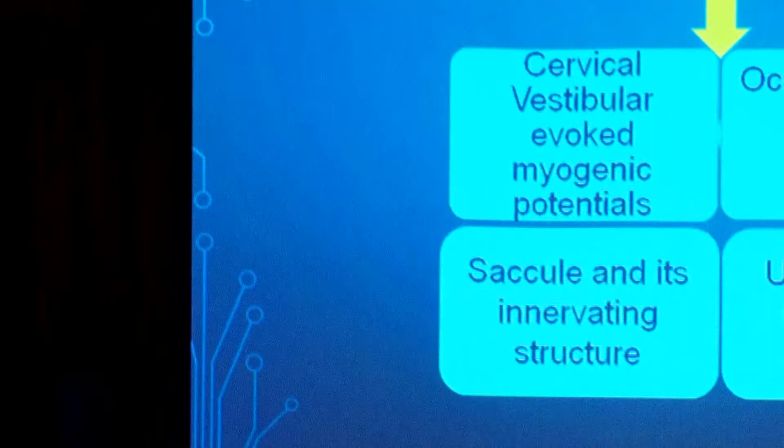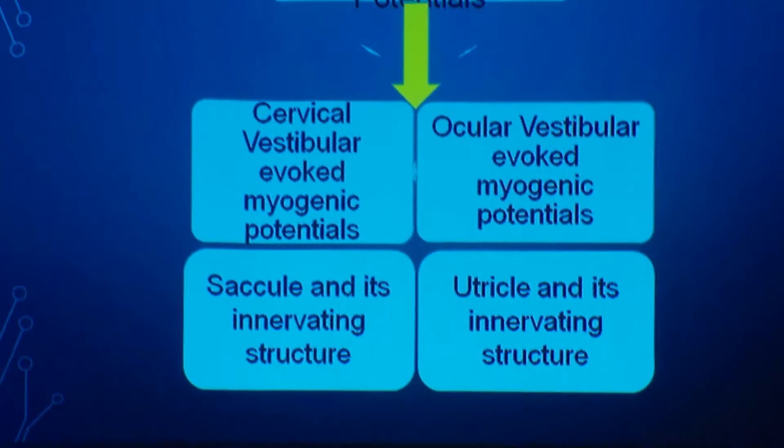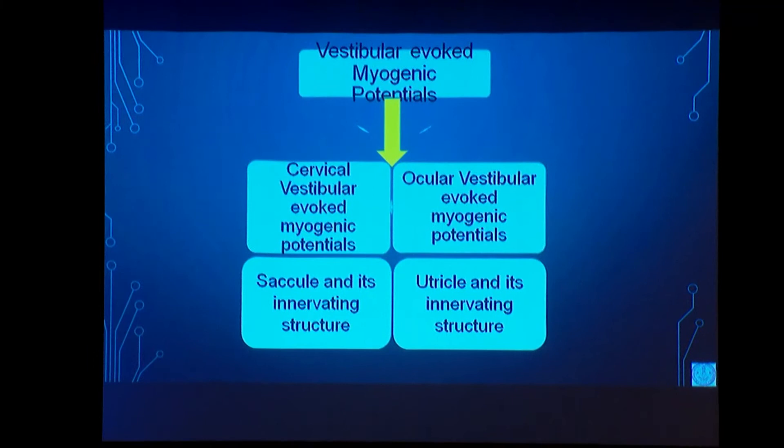The first type is cervical vestibular evoked myogenic potential (cVEMP) and the second is ocular vestibular evoked myogenic potential (oVEMP). The cVEMP assesses the saccule and the inferior vestibular nerve, whereas the oVEMP assesses the utricle and the superior vestibular nerve. We must remember: saccule and inferior vestibular nerve for cVEMP; utricle and superior vestibular nerve for oVEMP.